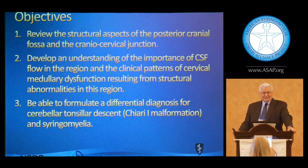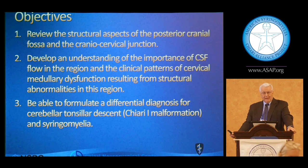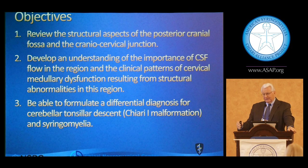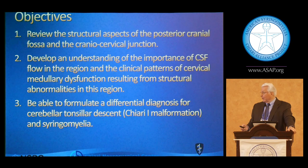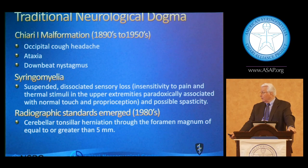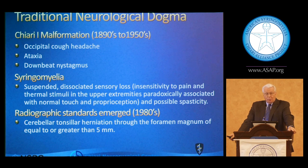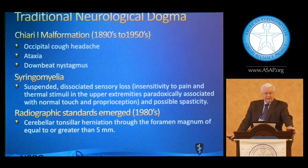Much of what has been discussed so far has had to do with neurosurgical understanding and how the management of these diseases can take place. But we want to take a step back and see how we progress forward. The traditional neurological dogma dates back to the 1890s, really up to and after the Second World War, when specialty neurology practice was better defined. The American Academy of Neurology dates to about that time after World War II.